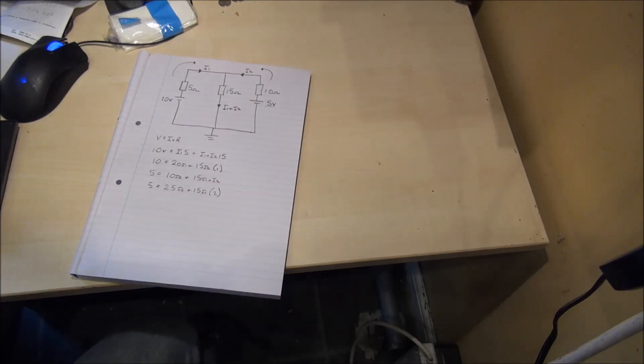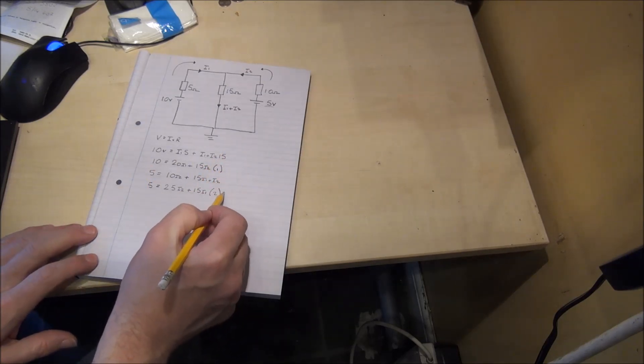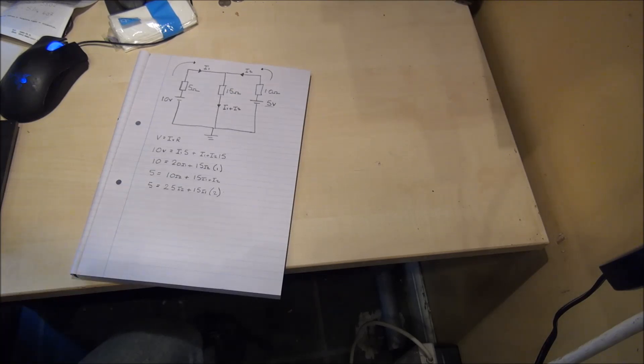At this point we've arrived at a simultaneous equation. The top term and the bottom term form a simultaneous equation. We can use the simultaneous equation to find the currents I2 and I1.